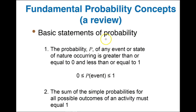When we look at fundamental probability concepts, the probability of an event or state of nature occurring is greater than or equal to zero and less than or equal to one, where zero is a zero percent chance and one is 100 percent. One of the things we know is that the sum of all simple probabilities has to equal one — however many ways you split it up, it has to add up to one or 100 percent.